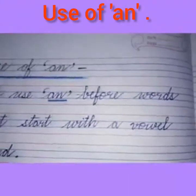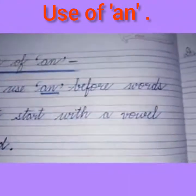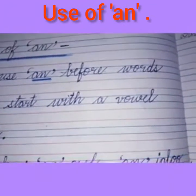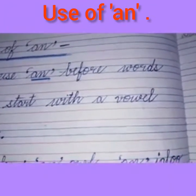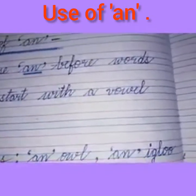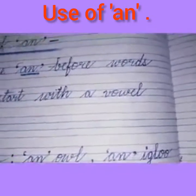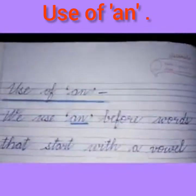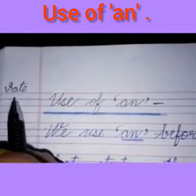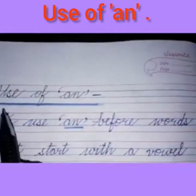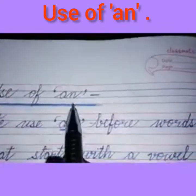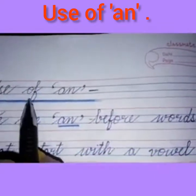Good morning dear children. Today's English work we will do in our notebook, so take out your notebook and your stationery. I hope you have taken out all the things. Start today's work. Firstly, you have to write the date in this corner box, then you will write down the heading: Use of An.